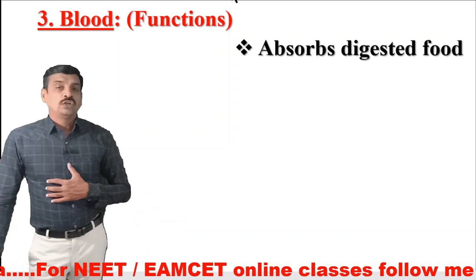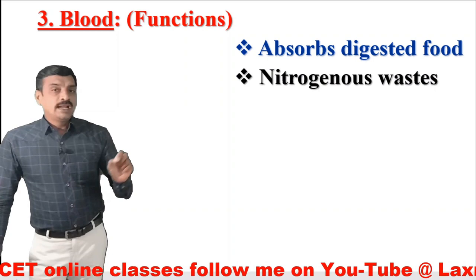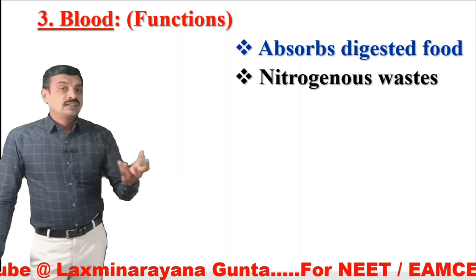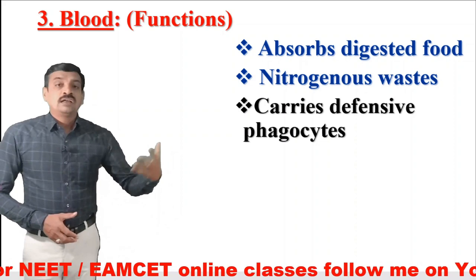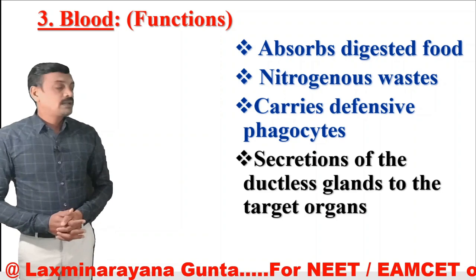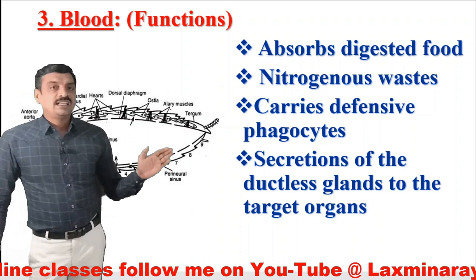The functions of blood include: absorbing digested food and supplying nutrients to each and every cell; carrying nitrogenous waste products to excretory organs like Malpighian tubules; carrying defensive phagocytes to the site of infection; and carrying hormones to the target organs, as hormones are secretions of the ductless glands.